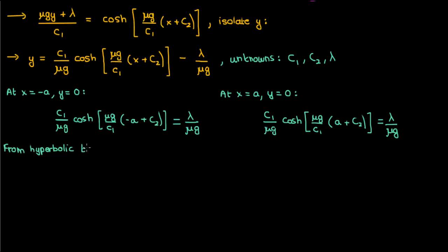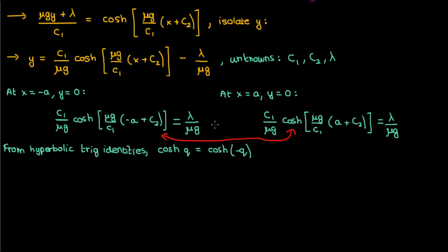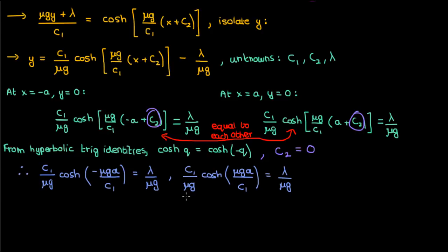Using the hyperbolic trig identity that cosh of something equals cosh of negative something — resembling the regular cosine identity — both boundary conditions have cosines equal to the same thing, one with negative a and one with positive a. Since both cosines are equal and there's a c2 in the way, we can conclude c2 must be 0, because if c2 is 0 we are just following the identity that cosh of something equals cosh of negative something. So our boundary condition equations simplify, and lambda equals c1 times cosh of (mu g a over c1).